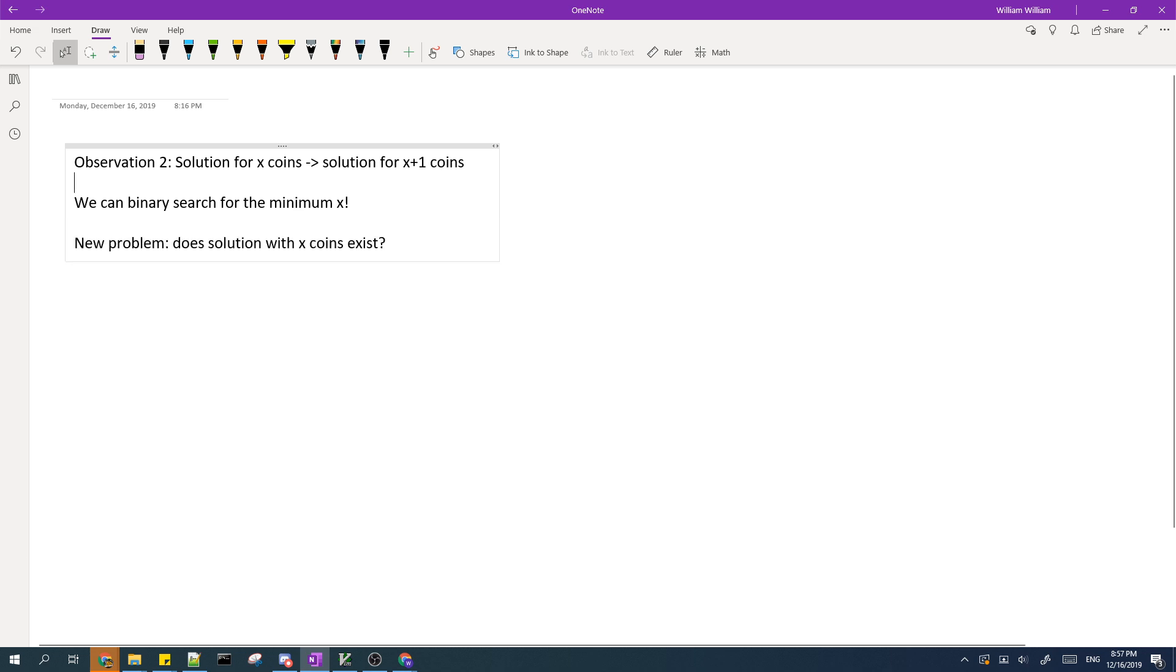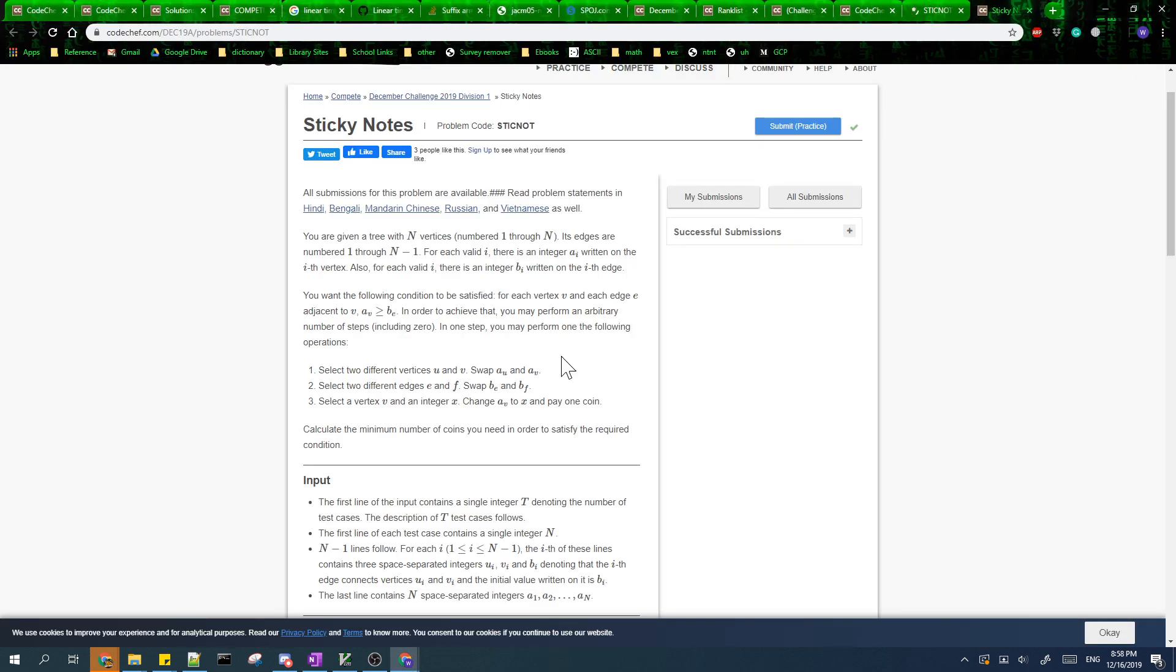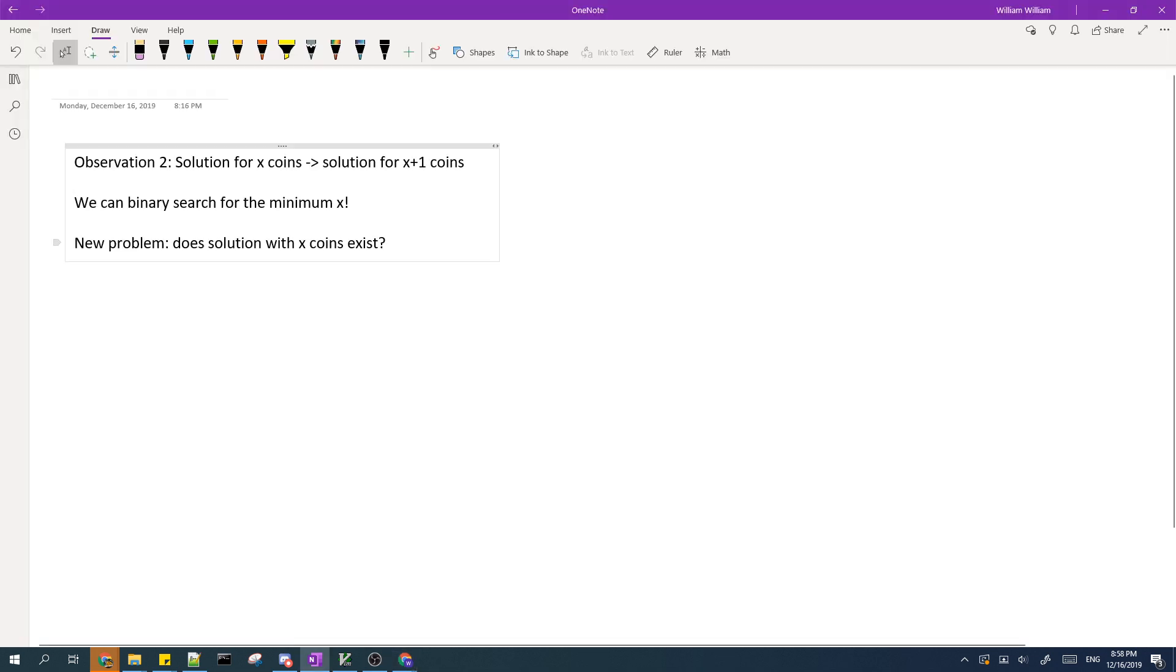So our new problem now is does there exist a solution with exactly X coins. And if we have binary search, we can just use binary search to solve the entire problem once we figure out how to solve this new problem.